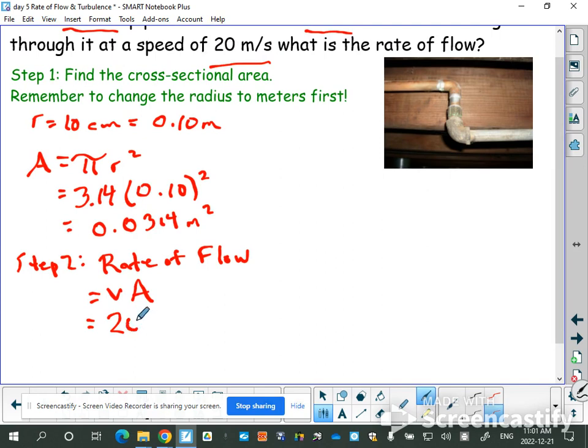So I just need to take the 20 meters per second, multiply by my 0.0314. You can see now why I needed meters. This needs to be meters, as does this, in order for that to work. And I will multiply them, and that will give me 0.628 meters cubed per second.